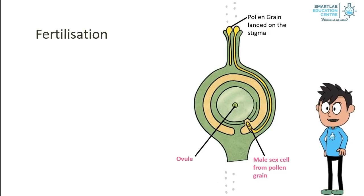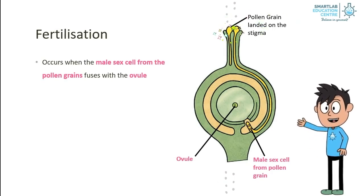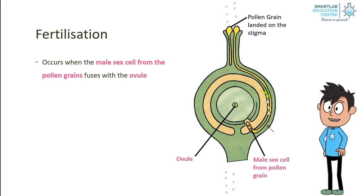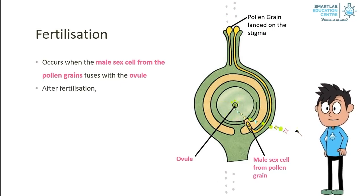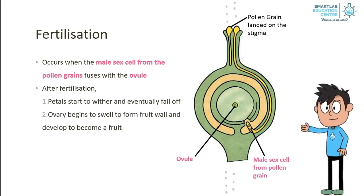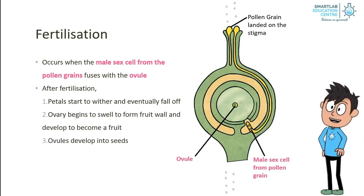Fertilization occurs when the male sex cell from the pollen grain fuses with the ovule. The pollen grain lands on the stigma. The pollen grain secretes chemicals and grows a tube to release the male sex cell, which fuses with the ovule. After fertilization, the petals will start to wither and eventually fall. The ovary begins to swell to form a fruit wall, which develops to become a fruit. The ovules develop into seeds.